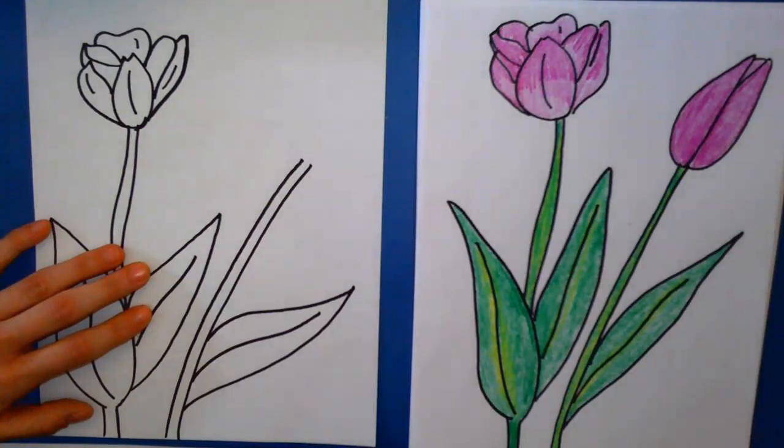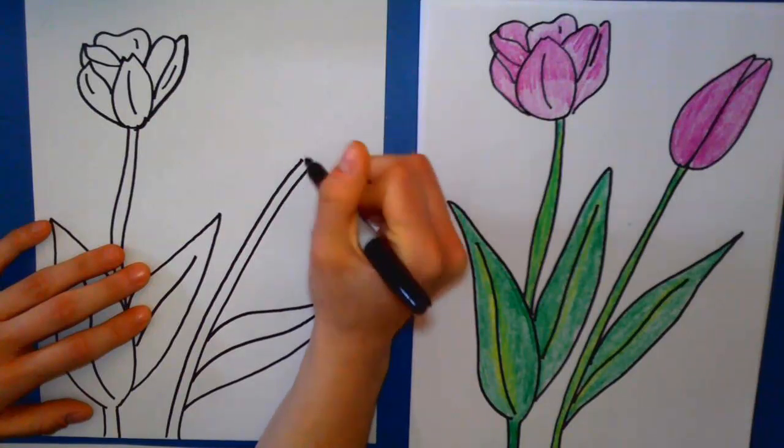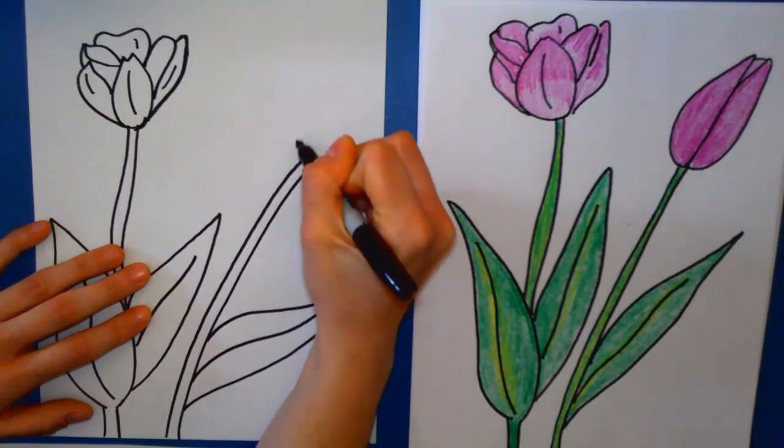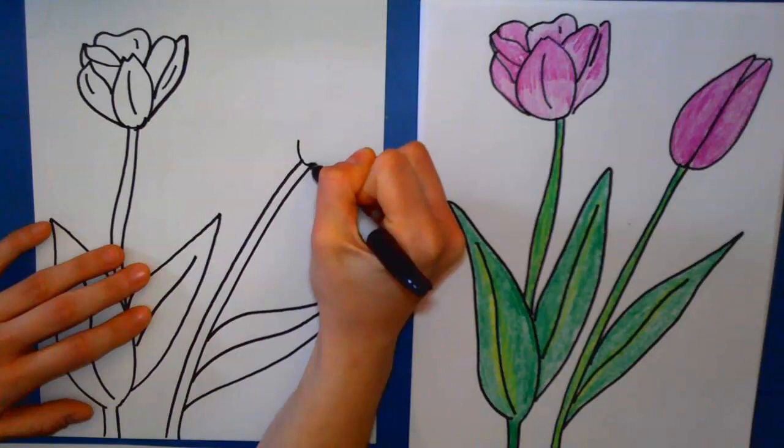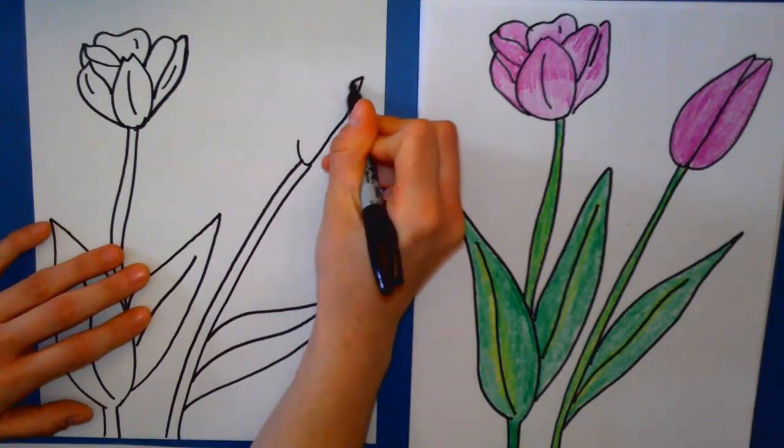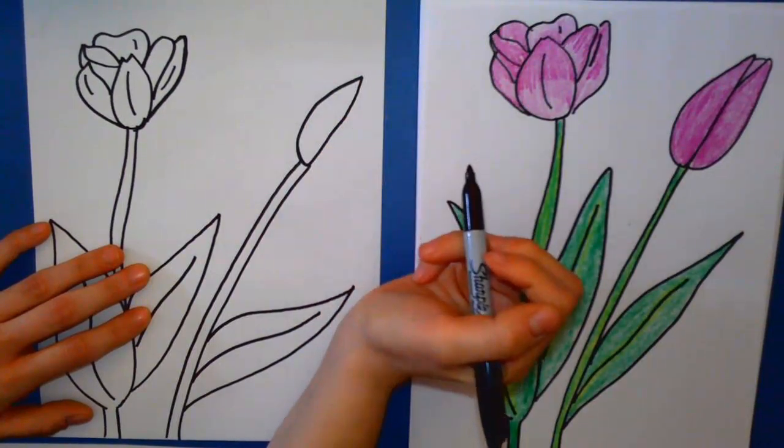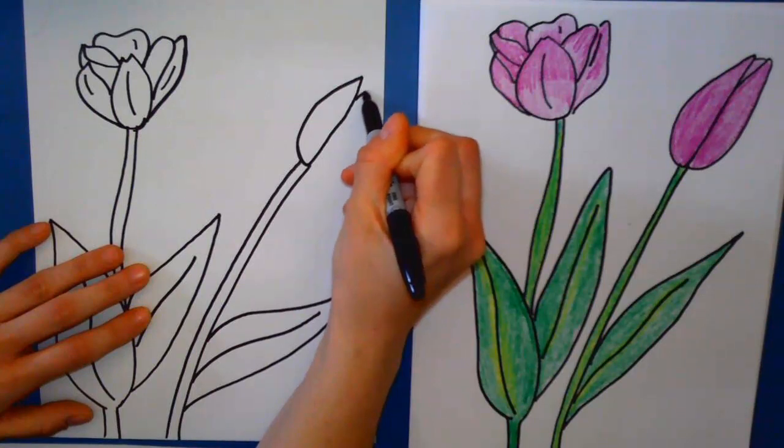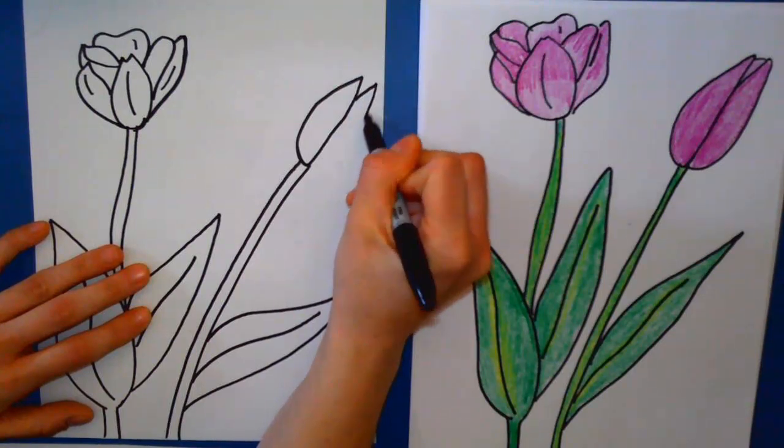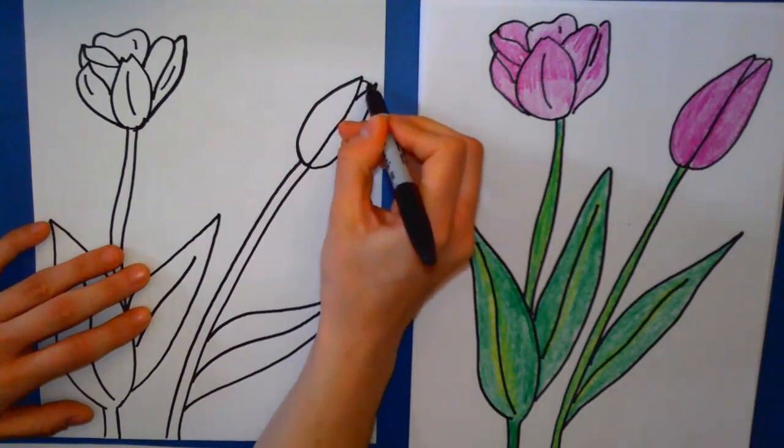And now for this one this one has not quite blossomed yet or bloomed yet so we're gonna go ahead and draw a curve and then bring a line straight up to a point back down and around. And then this one I'm gonna do a diagonal line up to a point and curve it down and around with a little curve there.